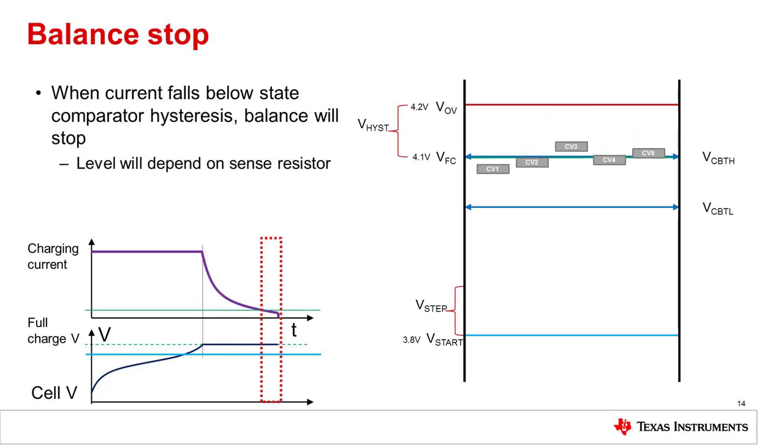When current drops below the state comparator hysteresis level, the balancing will stop. This may be from the charger terminating, or it may be from the threshold crossing.